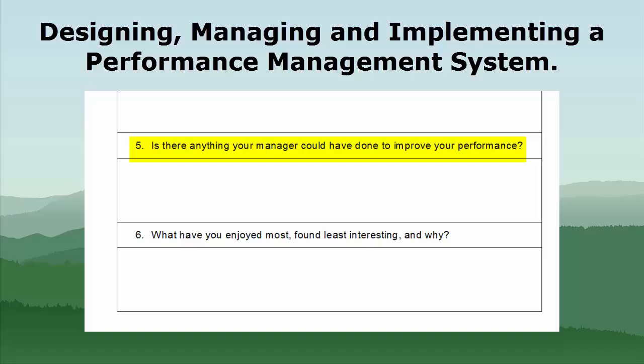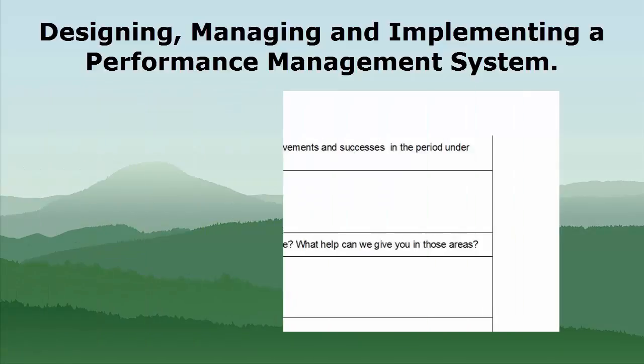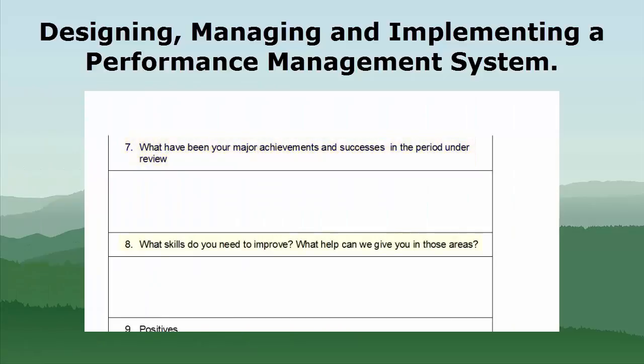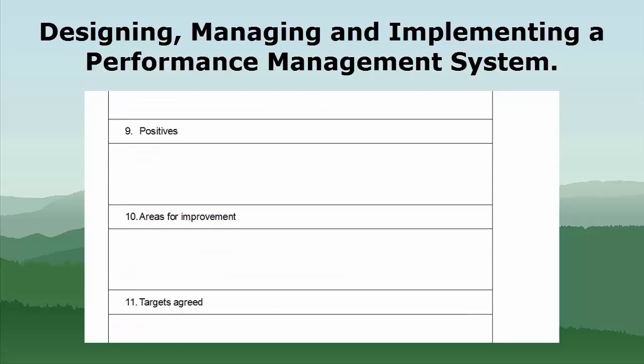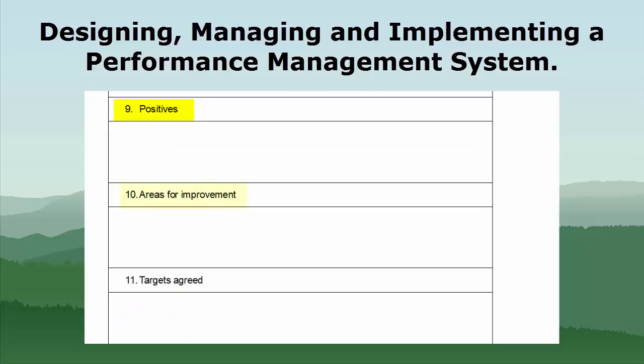Is there anything your manager could have done to improve your performance? So you just note there that the manager is committing to help improve the performance. And then make a note of what the appraisee found most enjoyable and least interesting and why. A record of the achievements and successes. And a review of what skills might be needed to improve — this may relate to new developments that are coming in that the manager is aware of, and may know that the appraisee will need some training in new technologies. This is at least a record for the HR department of what needs to be done. And then you may note any positives, any areas for improvement, and what targets have been agreed.